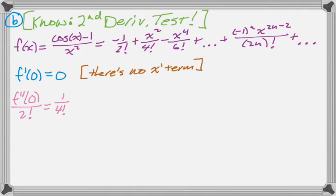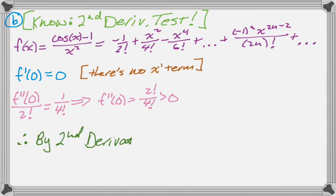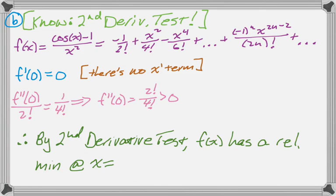So the second derivative divided by 2 factorial is 1 over 4 factorial, and that gives me that the second derivative is 2 factorial over 4 factorial, which the only thing I really need to know here is if it's greater than or less than 0, and that's obviously greater than 0. Therefore, by the second derivative test, I can say that f of x must have a minimum, because it has a horizontal tangent line, and it is concave up. Alright, so that would be my answer to part B. So far, so good.